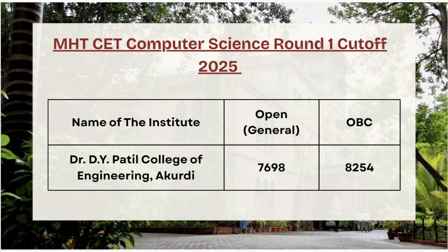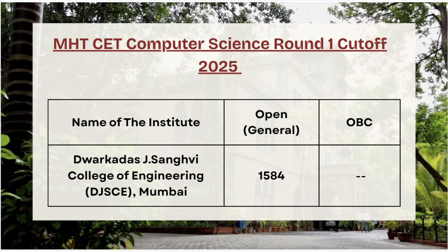Moving ahead we have Dr. D.Y. Patil College of Engineering. For open category the cutoff rank is 7698, and for OBC category the cutoff rank is 8254. Next we have Dorka Das J Sangvi College of Engineering — for open category, the CSE cutoff rank is 1584.